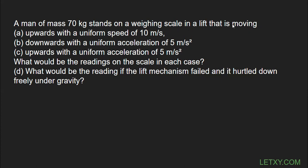We need to use the lift formula, which we have already discussed in class. When the lift moves upward, the formula is R = m(g + a). When the lift moves downward, R = m(g − a). If the lift is moving upward with acceleration a, the apparent weight is given by the first formula; if moving downward with acceleration a, the apparent weight is given by the second formula.